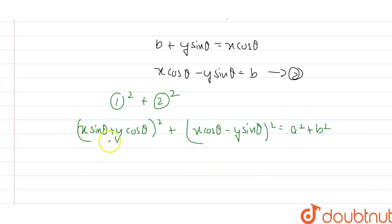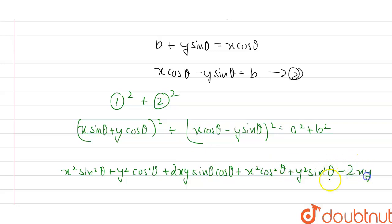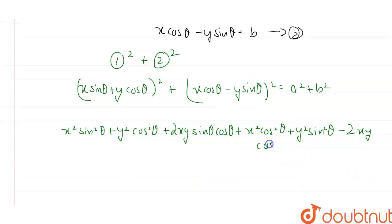Expanding: (x sin θ + y cos θ)² gives x² sin²θ + y² cos²θ + 2xy sin θ cos θ. And (x cos θ − y sin θ)² gives x² cos²θ + y² sin²θ − 2xy cos θ sin θ. The cross terms +2xy sin θ cos θ and −2xy sin θ cos θ cancel out with each other.